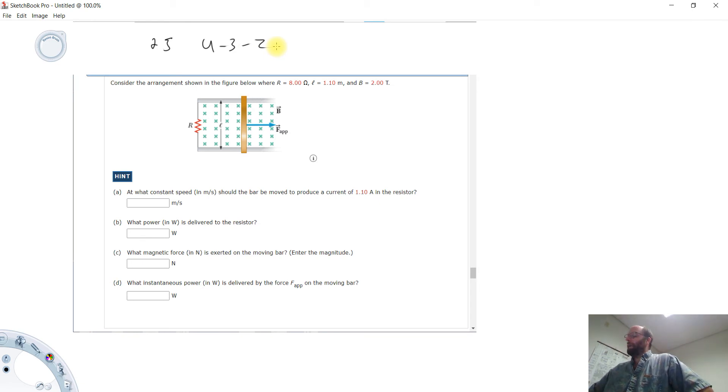Alright, so the idea of number 25 is we have this bar right here, a bar of metal not where you go to get beer, and somebody's pulling on it so that it's sliding across these connection points.